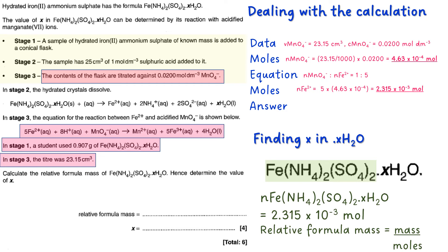So to get the relative formula mass, which is what we're after, we have to take the mass, which is 0.97, and the moles, which is 2.315 times 10 to the minus 3, and that gives us 391.8 grams per mole for this whole thing.